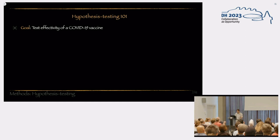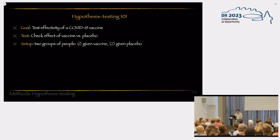The goal of this example is essentially we want to test the effectiveness of a COVID-19 vaccine. The test that we are going to run to check whether or not it's effective is to check the effect of the vaccine versus a placebo group, people that get something that is not the vaccine and see if there is a significant difference in behavior between these two groups. The setup of the experiment would be essentially have two groups of people, one group that are given the vaccine and the other group that are given the placebo.